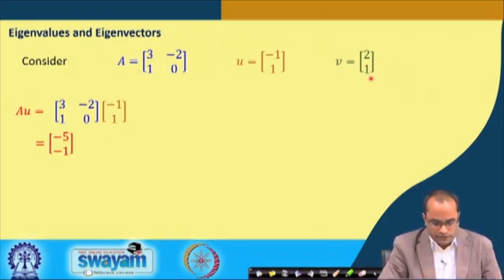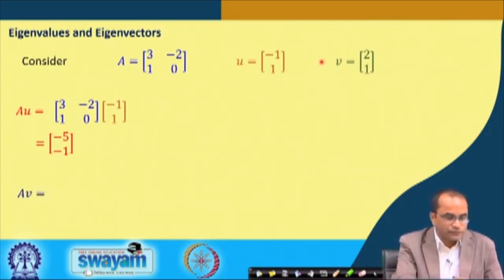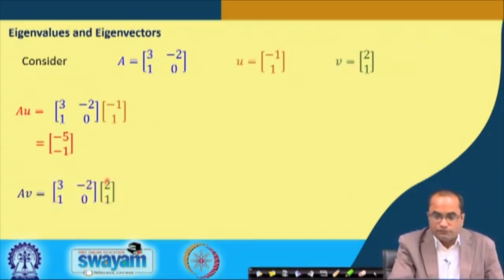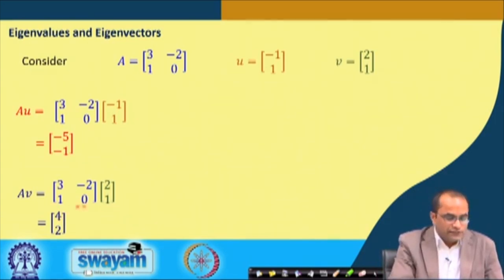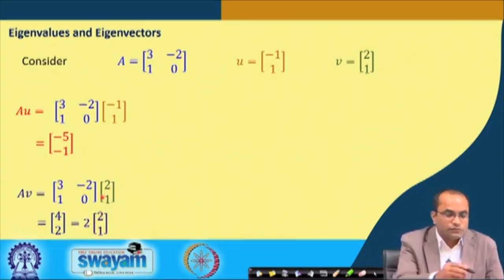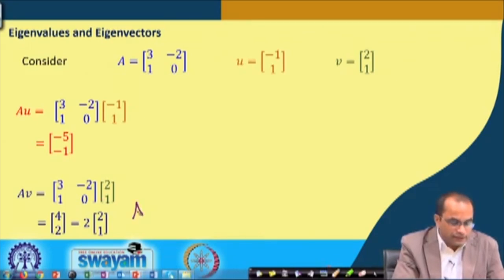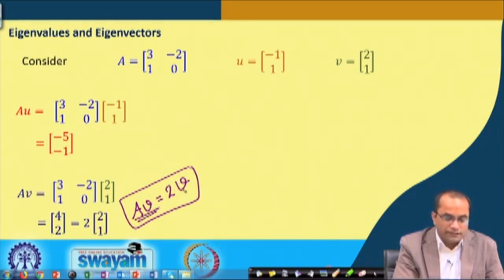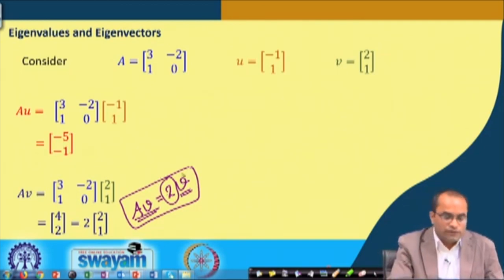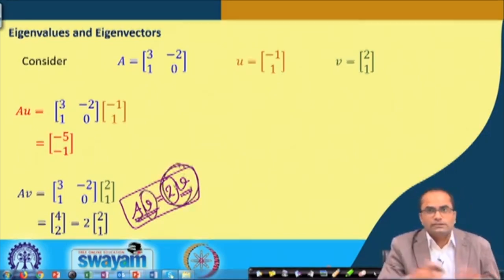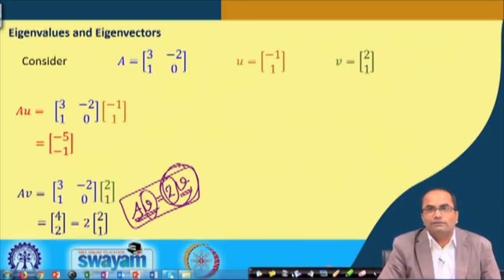But if we compute the product A times V, we get [4, 2], which is nothing but 2 times the vector [2, 1]. So what we observe is that A times V equals 2 times V. The length of this vector V has doubled after multiplication. This is exactly the point which will take us to the introduction of eigenvalues and eigenvectors.